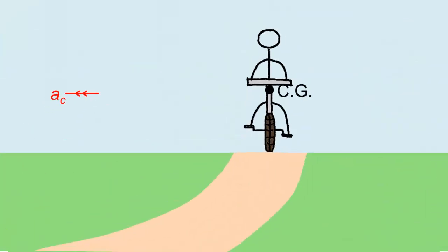But the frictional force has a side effect. While the lines of action of the weight and normal contact force pass right through the centre of gravity of the cyclist, the line of action of the frictional force doesn't. The frictional force produces a clockwise moment.